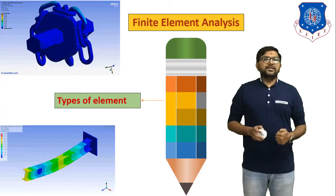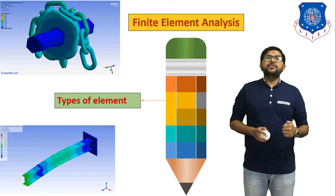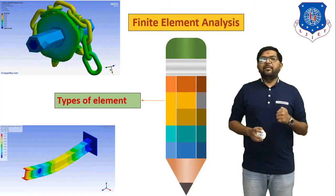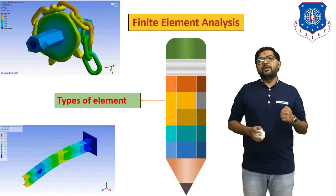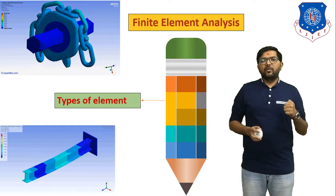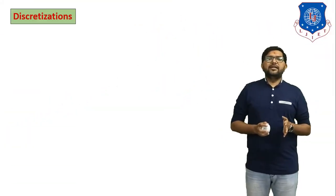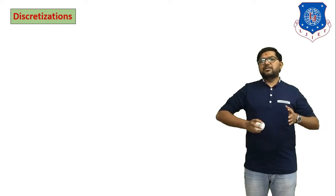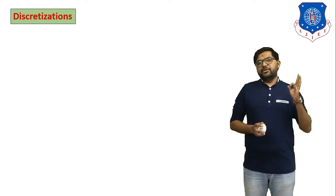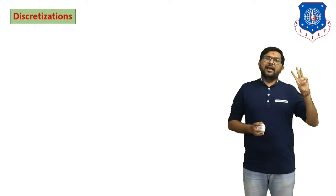In today's session we have to discuss one more topic: Types of Elements — how many types of elements are available and useful in FEA analysis. Before understanding the types of elements, we need to understand three definitions: the Discretization Process, Elements, and Nodes.